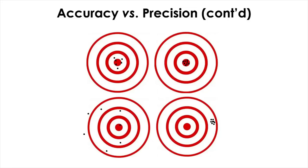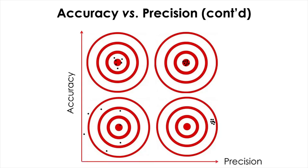We can put together all four shooters in a single graph, where the vertical axis represents accuracy increasing from bottom to top, and the horizontal axis represents precision increasing from left to right.